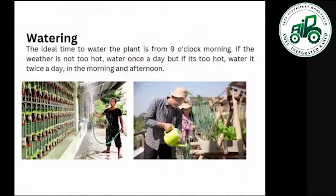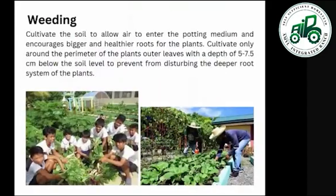For watering, the ideal time is from 9 o'clock in the morning if the weather is not too hot — water once a day. If the weather is too hot, water twice a day — in the morning and in the afternoon. For weeding, cultivate the soil to allow air to enter the potting medium and encourage bigger and healthier roots. Cultivate only around the perimeter of the plant's outer leaves at a depth of five to seven and a half centimeters below the soil level to avoid disturbing the deeper root system.